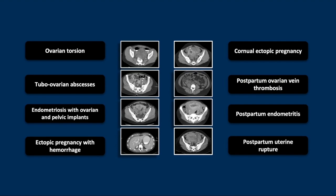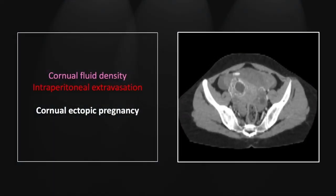Our next case is a cornual ectopic pregnancy. These, of course, are particularly concerning as they involve the myometrial portion of the fallopian tube in the cornua of the uterus, and so are predisposed to even more dramatic hemorrhage than your typical ectopic. You see it here — the fluid collection in the cornual portion of the uterus with surrounding gestational trophoblastic changes, and anteriorly a focus of active extravasation contributing to a large amount of hyperdense intrapelvic fluid.